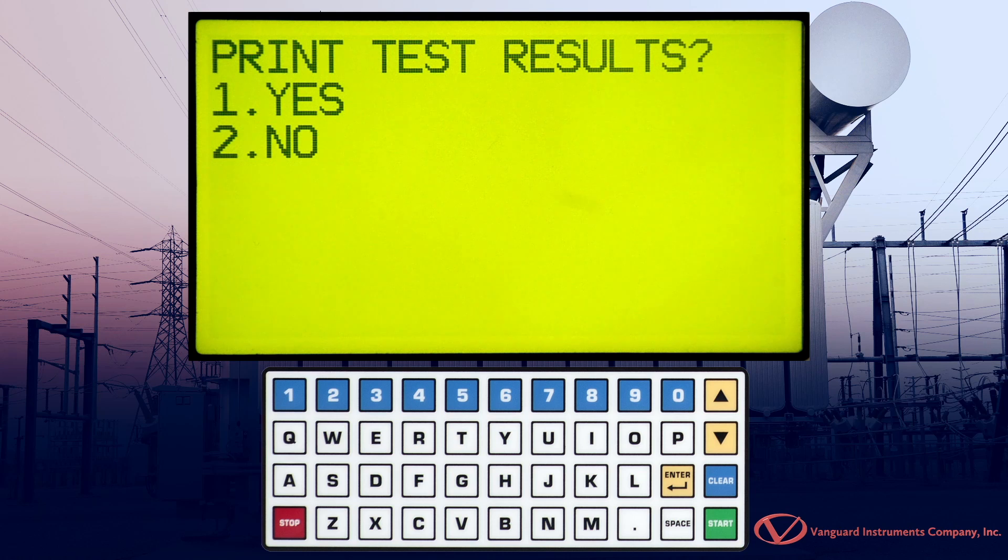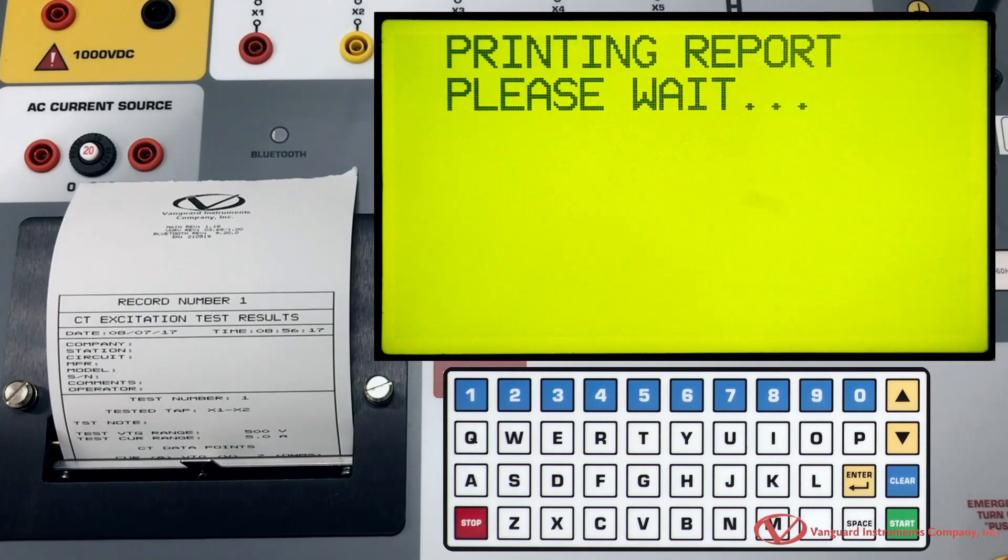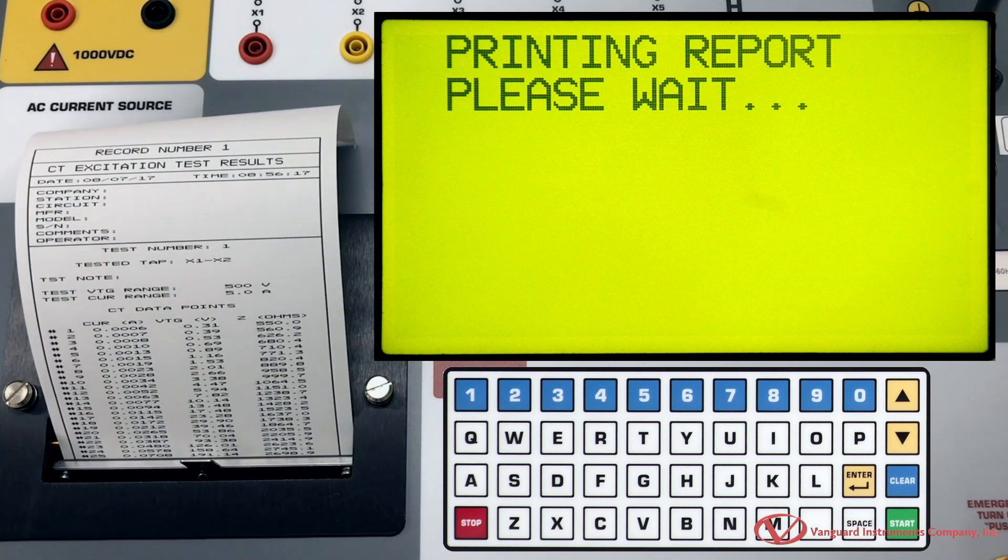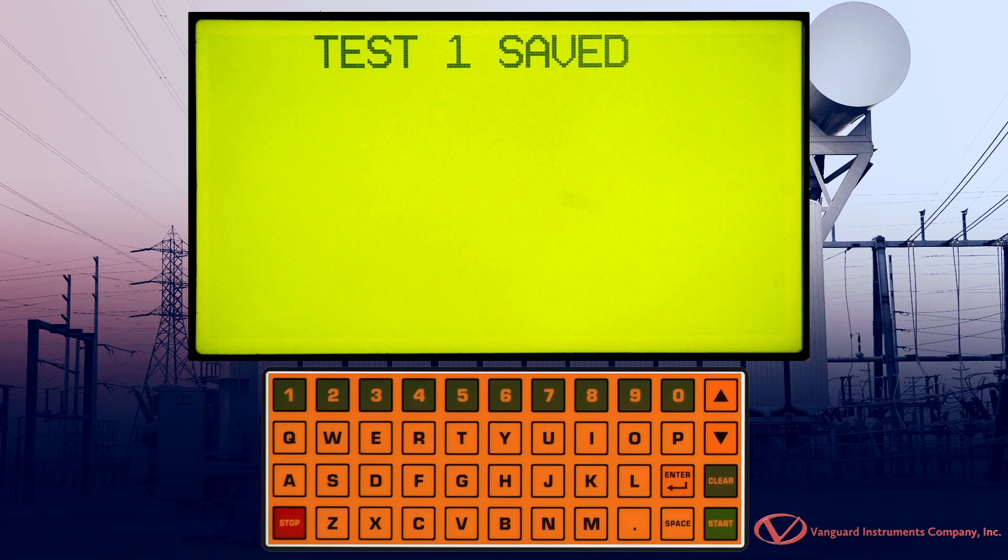Press any key to continue. Now, press the 1 key to select Yes and the unit will print the test results on the built-in thermal printer. Press the 1 key to keep the test results. Press any key to continue.